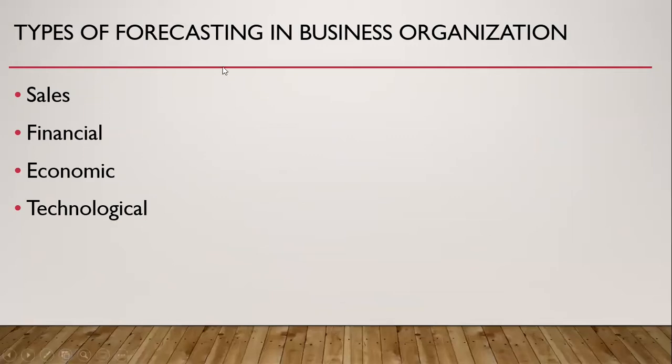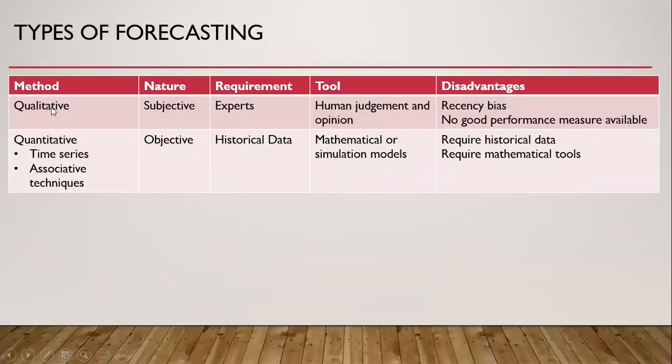These are the types of forecasting which are important for business organization: sales forecasting, financial forecasting, economic forecasting, and technological forecasting. Forecasting may be divided into qualitative and quantitative. Quantitative include time series analysis and associative techniques. The qualitative methods are subjective in nature and require expert opinion. The tool is human judgment. Quantitative methods are objective in nature and require historical data. The tools are mathematical or simulation methods.